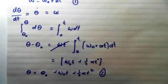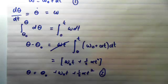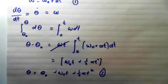Now we'll look at the third equation of motion, which relates displacement, angular velocity, and angular acceleration without time as a variable. So, when we don't know time, we can still find our angular acceleration, angular velocity, and angular displacement. To do this, we'll use the chain rule.